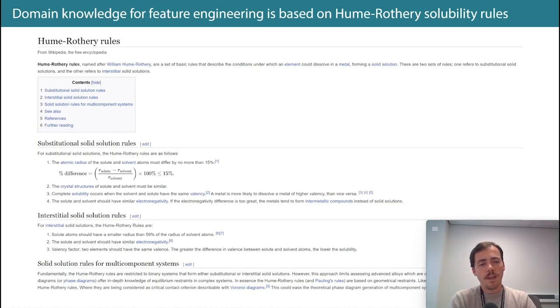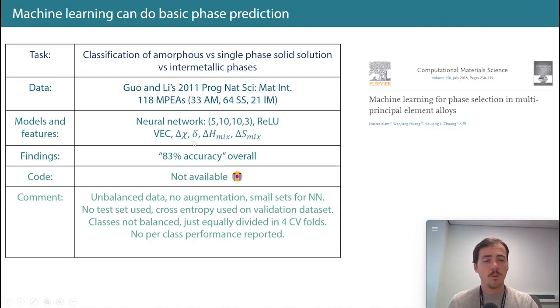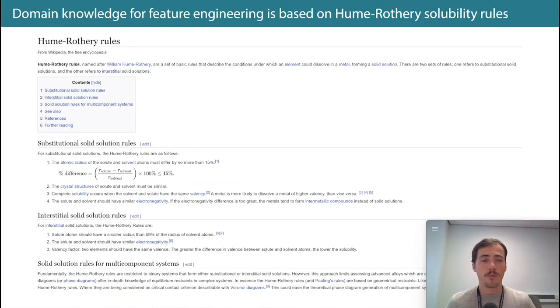Breaking up your performance into a per-class basis would be really useful here. Now why these features — valence electron count, electronegativity? It comes from what we know about solid solubility. If you go back to the Hume-Rothery rules, we know that whether or not materials form a solid solution follows four general rules.